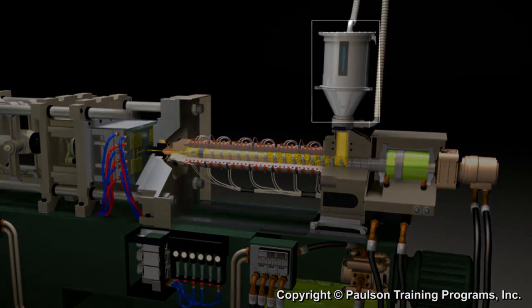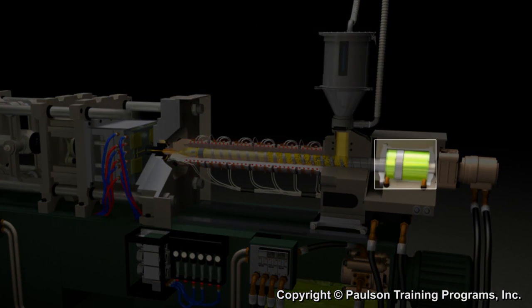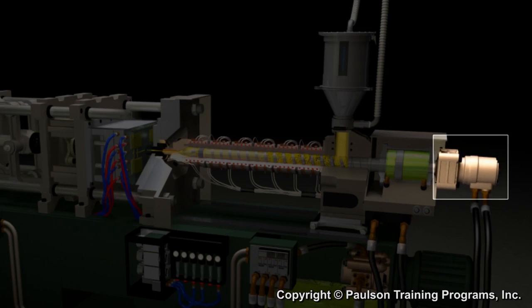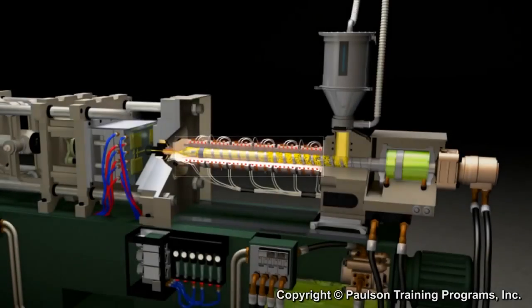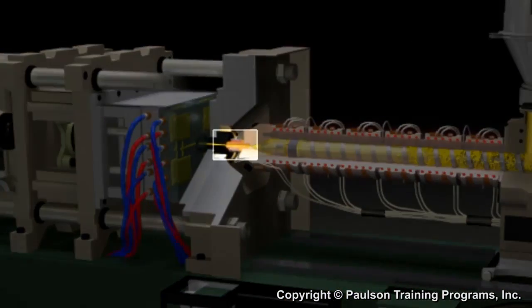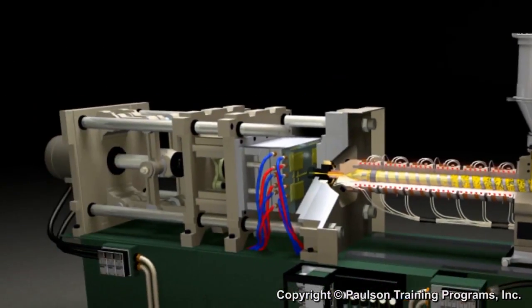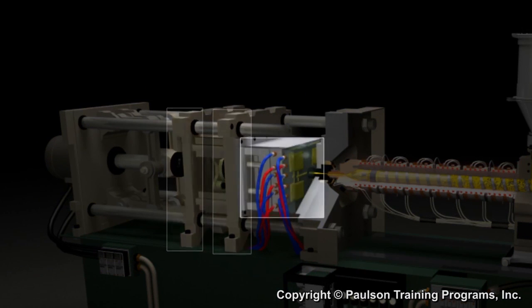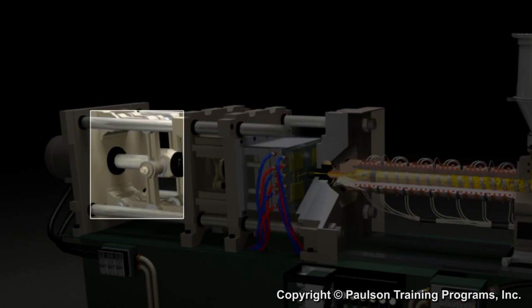Again, this is the hopper, the hydraulic injection cylinder, the screw drive motor, the barrel, the nozzle, the platens, the mold, and the clamp.